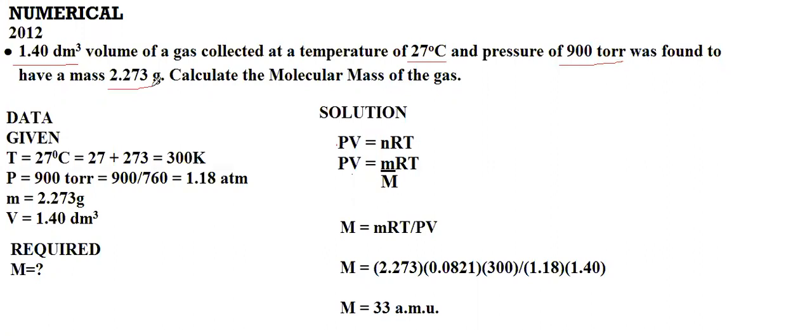First of all, we have 4 given data. We have temperature 27°C. We have added 273 to convert it, so we have 300 kelvin.